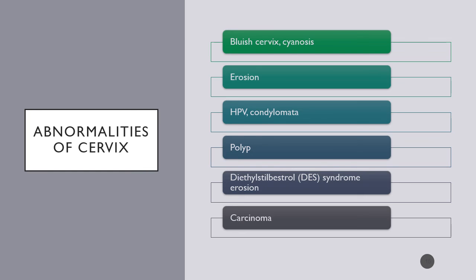HPV, also referred to as condylomata, is the pre-cancer stage. You can enhance the visibility of HPV lesions with vinegar or Lugol's solution, which is a strong iodine solution. Polyps can emerge from the cervical os, appearing as slightly dilated with tissue emerging from the os. Women from roughly 1940 to 1970 whose mothers were given DES for nausea during pregnancy may have abnormal cervixes due to fetal deformities caused by that exposure.